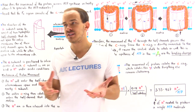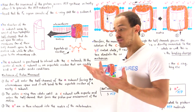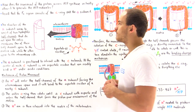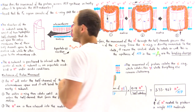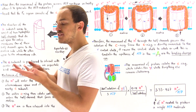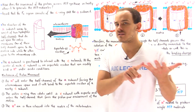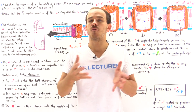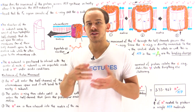The ATP synthase consists of two different regions. One is the F1 region, which we focused on in the previous lecture. In this lecture we're going to focus on the F0 region. The F0 region consists of two types of polypeptide subunits: the C subunit and the A subunit. We only have a single A subunit, but for the C subunits we have anywhere from 10 to 14 C subunits that aggregate together to form the C ring.